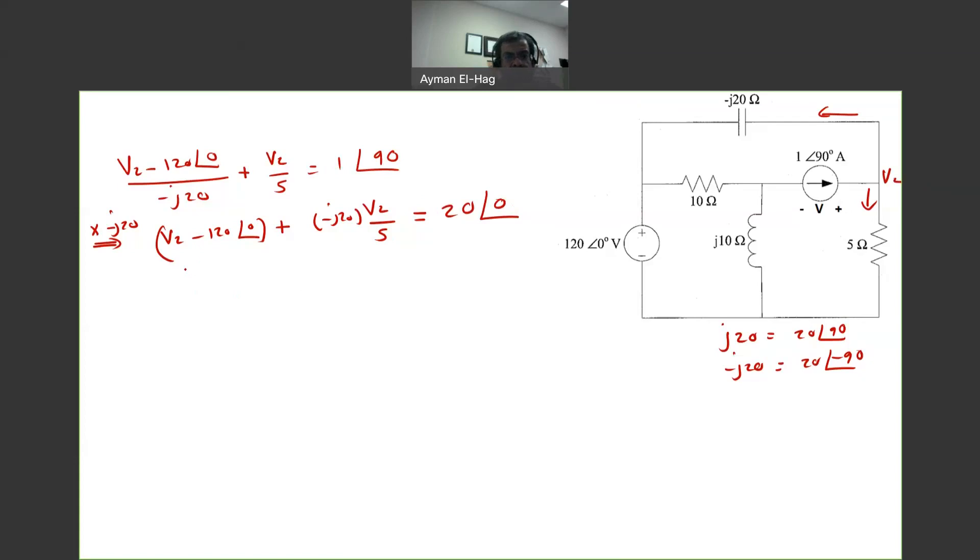Very good. So we will have here, V2, we will take this to the other side. Now, this becomes minus J4, so minus J4 V2, equal to 120, take the constant to the other side, plus 20. So this will give me 140.